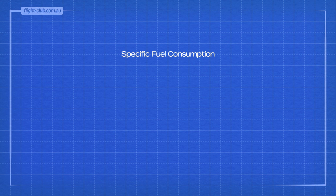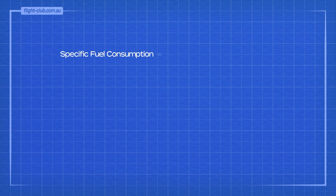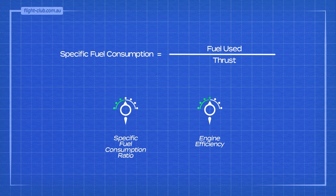Specific fuel consumption is a measure of engine efficiency. It is the ratio of fuel used per unit of thrust produced. The lower the value of this ratio, the more efficient the engine is. This is achieved by lowering fuel flow per unit of thrust.